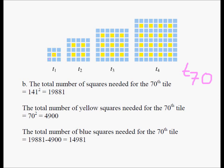Take a look at this. For 1 yellow square, you get 3 blue squares. For 2 yellow squares, you get 5 blue squares. For 3 yellow squares, you get 7 blue squares. For 4 yellow squares, you get 9 blue squares.